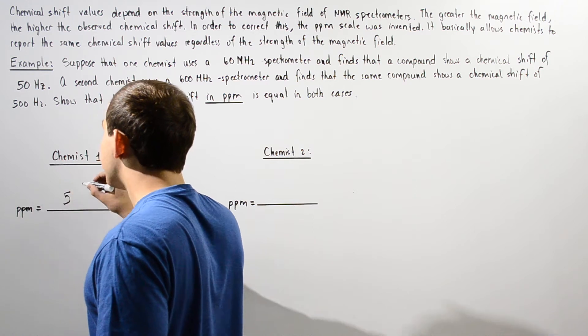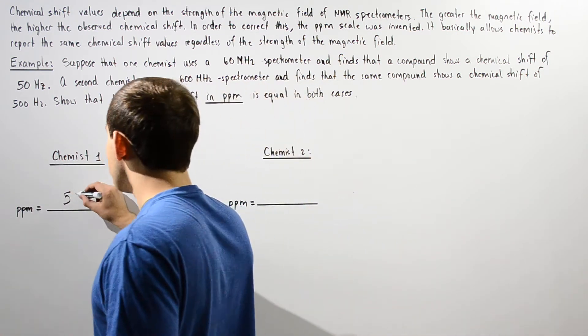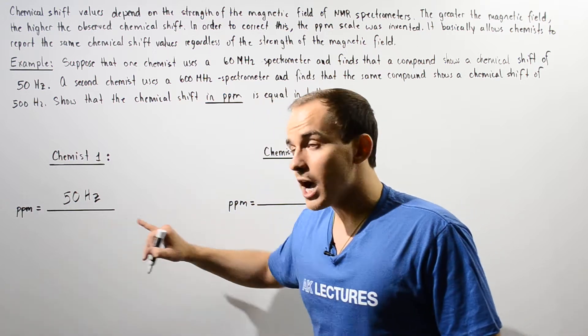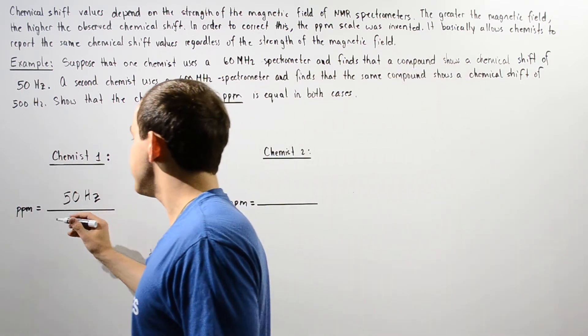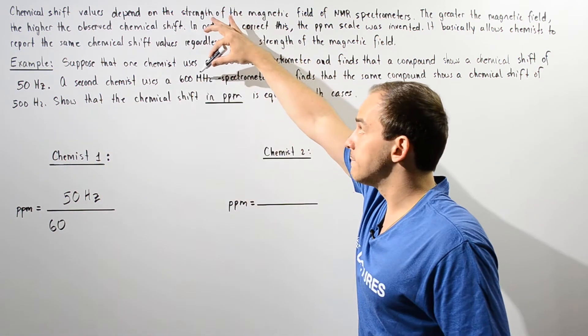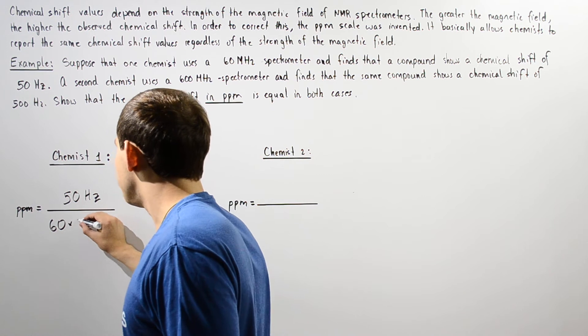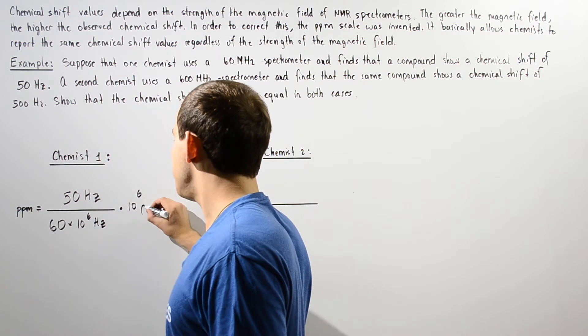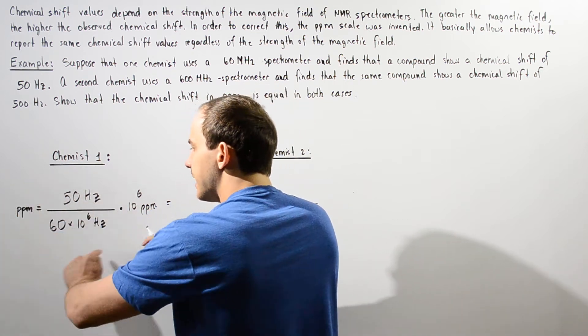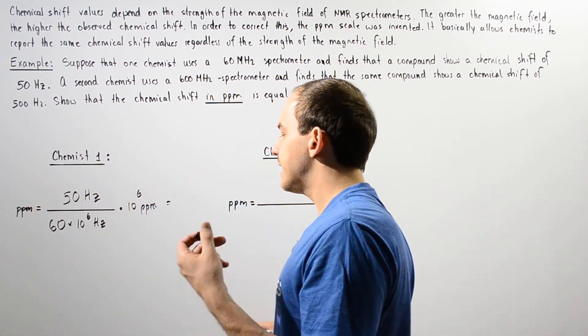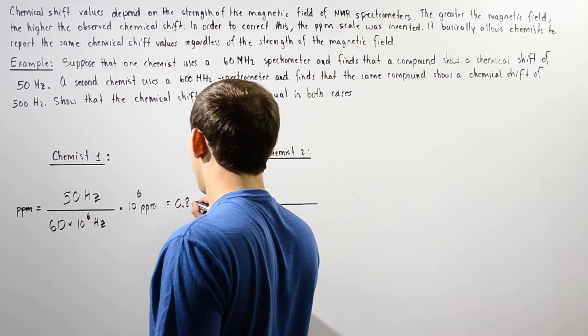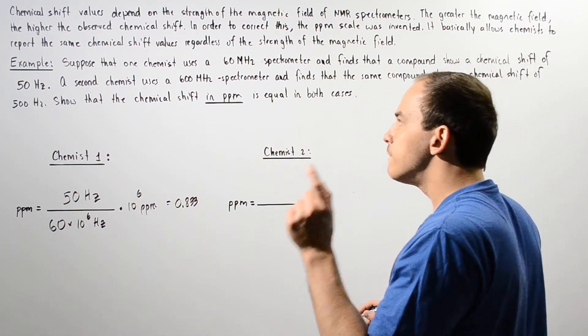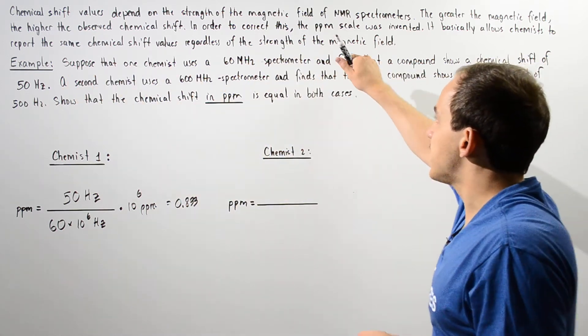So for chemist 1, chemist 1 found that the resonance frequency of that particular compound is given to be 50 hertz. Now the rating of our spectrometer used in that case is 60 megahertz, which we convert to 60 times 10 to the 6 hertz. And we multiply this by 10 to the 6 ppm and we get 0.833 ppm. So this is the value of the chemical shift in ppm for chemist 1 when he used a spectrometer with this rating and produced a shift of 50 hertz.